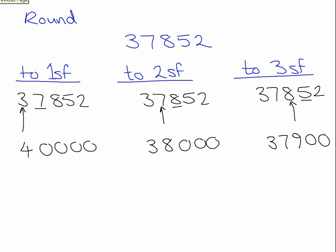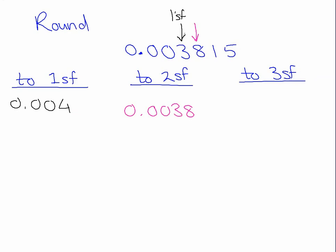For whole numbers, leaving out the placeholder zeros would massively reduce the size of the number — you can't say 37,852 is roughly four. But after a decimal point, there are no placeholders needed, just before. To three significant figures, we're rounding to this column. It's not a nine, so we write everything in front: 0.0038. Five is telling me to round up, so the one becomes a two — giving 0.00382. And we don't add the trailing zero because it doesn't change the size of the number.